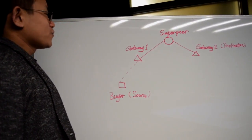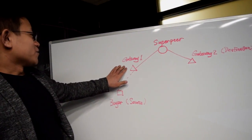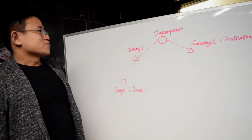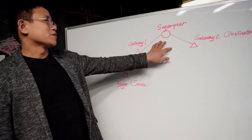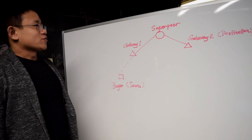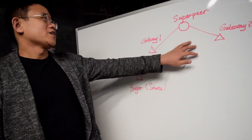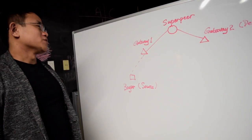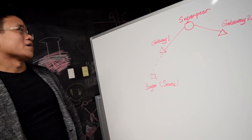Gateway peer 1 is responsible to forward the packet across the superpeer to the destination, and eventually gateway peer 1 will get paid. Because we are using the payment channel, when gateway peer 1 and gateway peer 2 run for the first time, the superpeer checks if there are payment channels between the superpeer and those gateway peers. If there is no micropayment channel, the superpeer will create one. If the channel exists, data transmission can proceed.